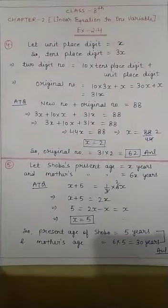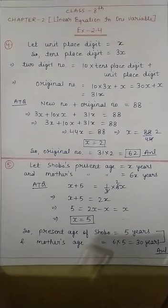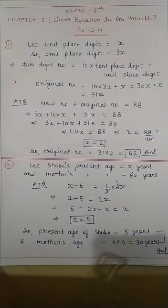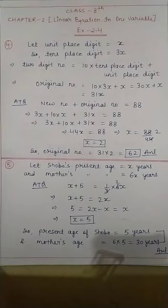Hello students, in this class we will do some questions of exercise 2.4. Now I am reading question number 4: One of the two digits of a two digit number is three times the other digit. If you interchange the digits of this two digit number and add the resulting number to the original number, you get 88. What is the original number?